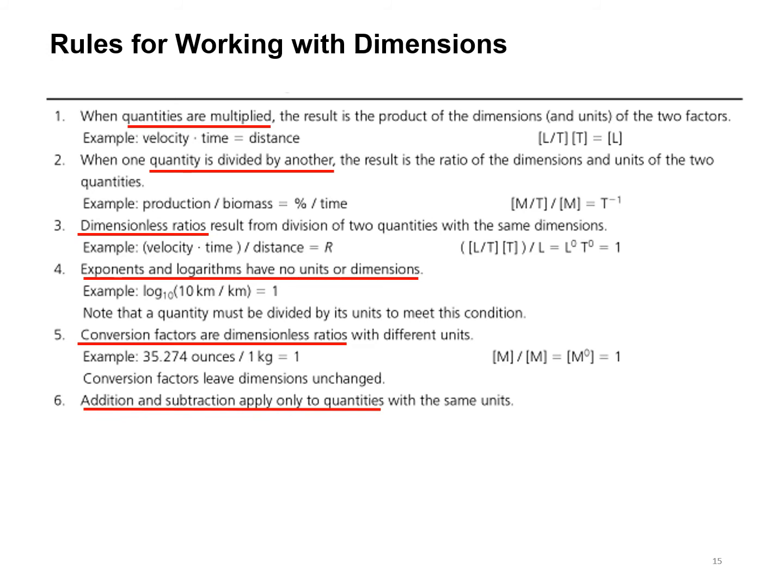Dimensionless ratios result whenever you divide two quantities with the same dimensions. Velocity times time is length divided by time times time, that's going to give you a length divided by length, that's going to give you one. Could be some other ratio, but it's dimensionless.